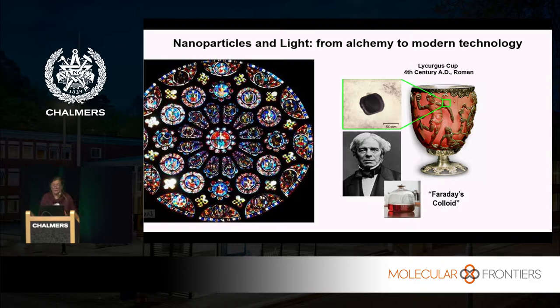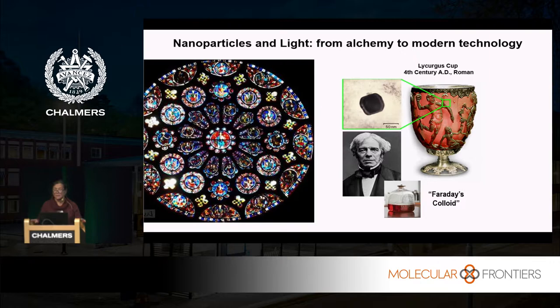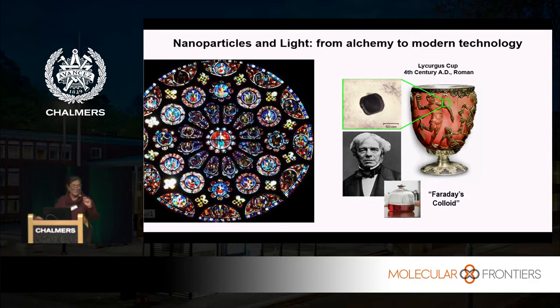So the birth of modern optics, or classical electromagnetism, we can relate to Michael Faraday, for providing the experiments that set up Maxwell's equations, that enabled Maxwell to derive his equations. He was interested both in light scattering and in nanoparticles — both an optical scientist, in that early era, and a chemist. And he made gold nanoparticles.